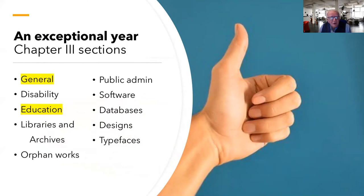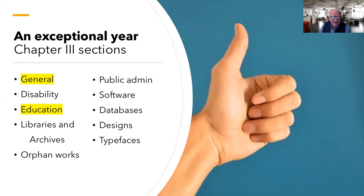The ones I want to deal with this morning are obviously general and education, but that's not to say you should ignore the others. There is an exceptionally good range of disability exceptions, a very good range for libraries and archives, and more recently a lot of work done on orphan works — those works where we can't track down who manages the rights anymore, be it the publisher, the creator or a licensing agency. But I'm going to concentrate on general and education.